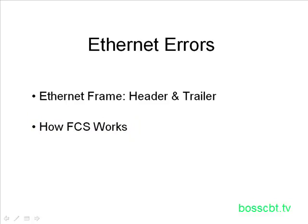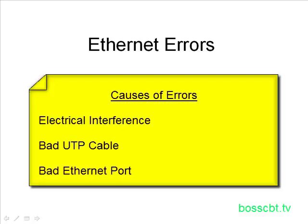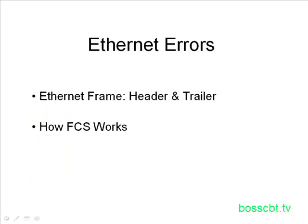The first thing we want to talk about is error detection itself. This is the process of determining if an Ethernet frame has been damaged or changed during transmission over the network. There could be a couple of causes: first, electrical interference — say a fluorescent light next to your UTP cable or a strong electric motor. Or it could be the cable itself, perhaps one or two pairs damaged inside. Or it could even be a damaged interface on either side of the cable causing problems in transmission. Basically, there's a problem in the signal and the frames are being changed accordingly.